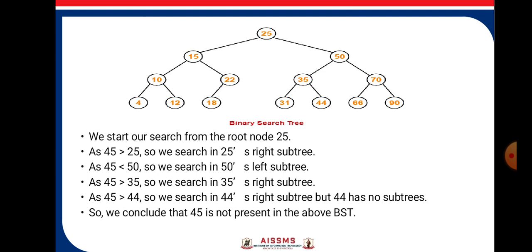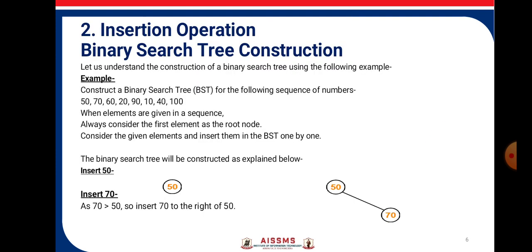Now, 50 is greater than 45, so we will search in 50's left subtree. As 45 is greater than 35, we will search in 35's right subtree. As 45 is greater than 44, we will search in 44's right subtree. But 44 has no subtree, so we conclude that 45 is not present in the above binary search tree.